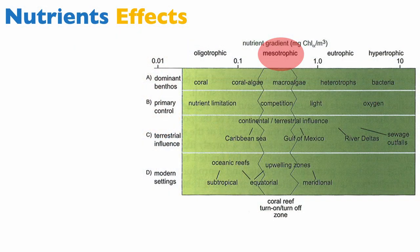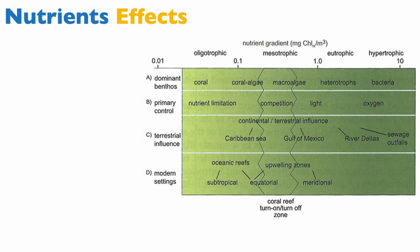If you increase nutrients a little bit and go into the mesotrophic zone, we start to have coral and algae together, including a lot of coralline algae — algae that precipitate calcium carbonate. That's a very common theme in ancient and modern coral reefs. In the low mesotrophic zone, corals still do well but start to have competition with algae, and competition is really the key here. If you go higher into the mesotrophic zone and increase nutrients further, you start to have macroalgae forming, you lose the corals, and light becomes the main primary control on the organisms that can be found there.